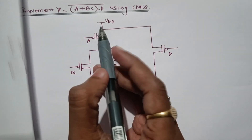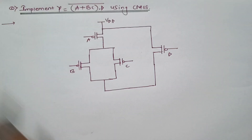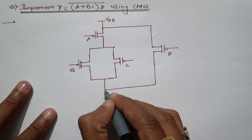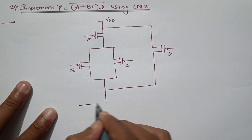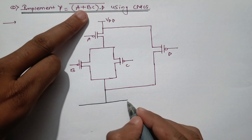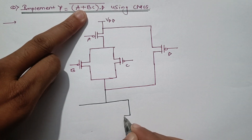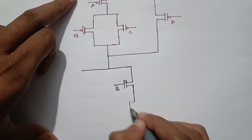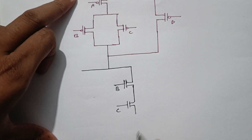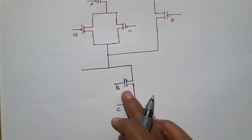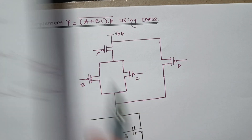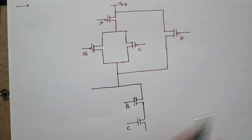Now we have to reverse it for NMOS. Starting with the first operator: B into C. For multiplication, NMOS should be connected in series. We draw both transistors for BC — these are NMOS transistors. This is B and this is C — these two are in series.